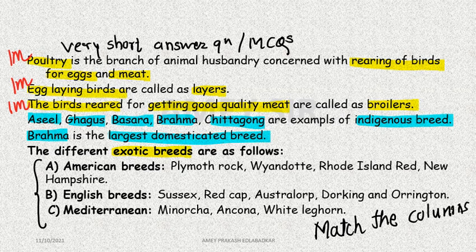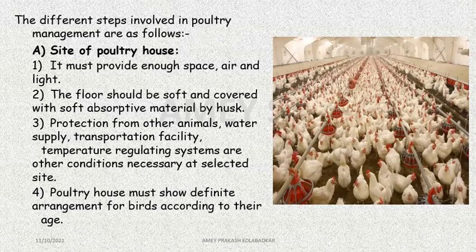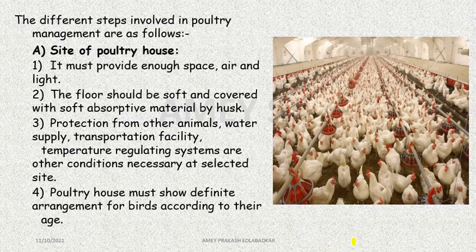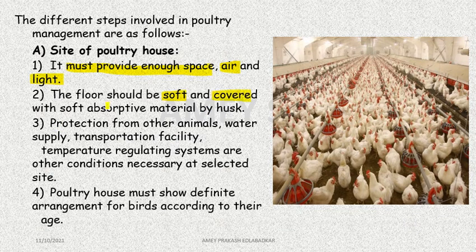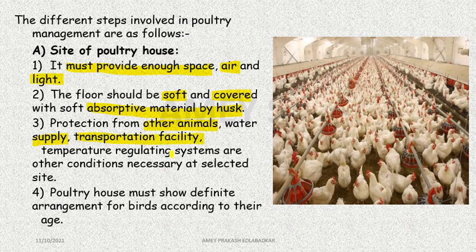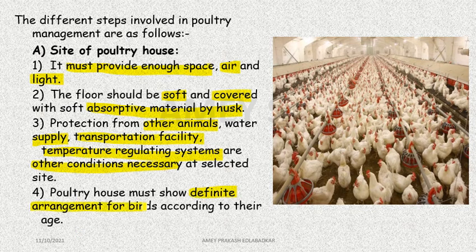Now let's see what the requirements are in poultry farming and what steps are involved for development of poultry. First is site location. As you can see in the image, thousands of birds are kept there. It must provide enough space, air, and light. The floor should be soft and covered with absorptive material like husk, bhusa (straw), dust, or sawdust. There should be protection from animals, water supply, transportation facility, temperature regulating systems, and a definite arrangement for birds according to their age.